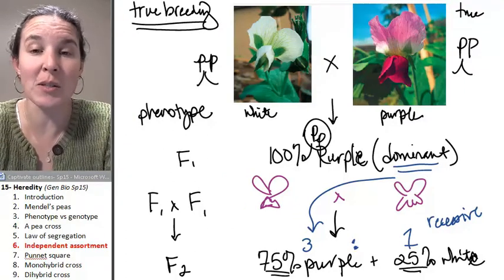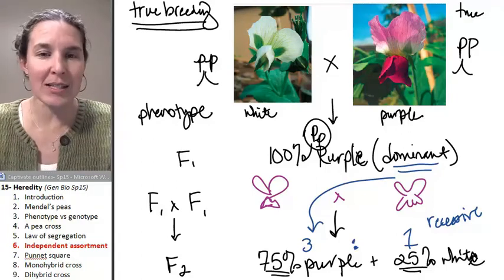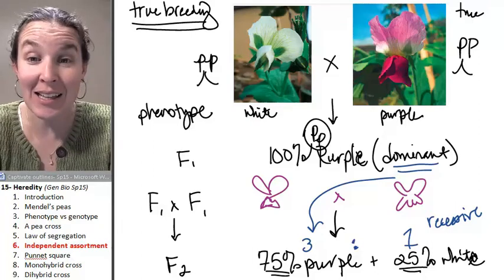He didn't know about chromosomes. He didn't know about genes or alleles, but he figured out, and now we've got all these data, and we can look at them and go, yeah, we can explain exactly how that happens.